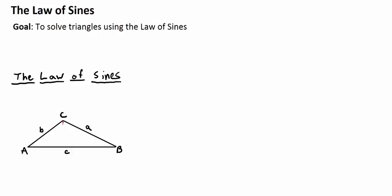I'm going to drop an altitude from angle C, which simply means dropping a perpendicular to the opposite side. Can you see the two right triangles I've created? There's the little right triangle on the left and the little right triangle on the right. Why do we want right triangles? Because the Pythagorean theorem and right triangle trigonometry — SOHCAHTOA — work nicely for right triangles.